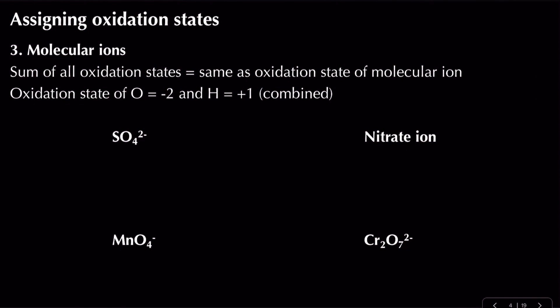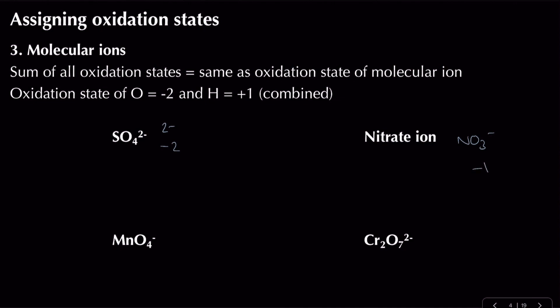The third rule: for molecular ions, the overall oxidation state equals the overall charge. So sulfate has an overall oxidation state of −2, nitrate (NO₃⁻) is −1, manganate is −1, and dichromate is −2. Within this rule, the sum of all individual oxidation states must equal the overall charge of the ion.